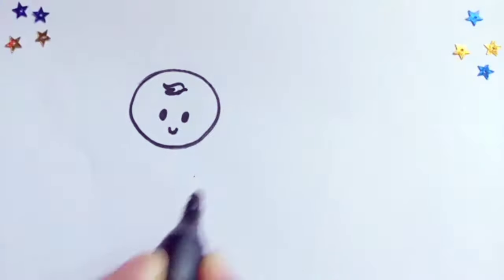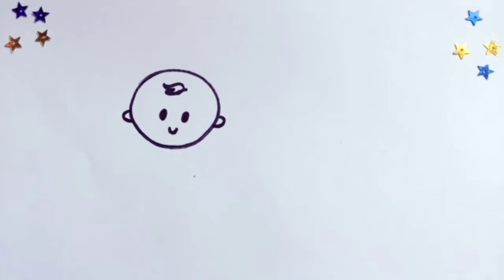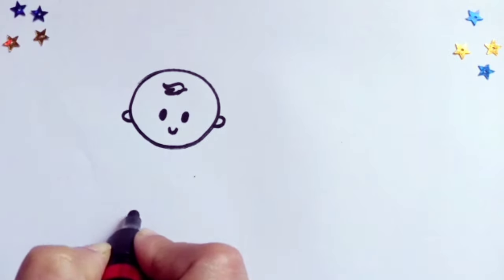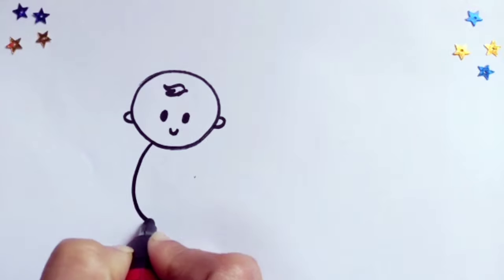Now his little hair. Ears. And now we'll draw an oval shape for the baby's body.